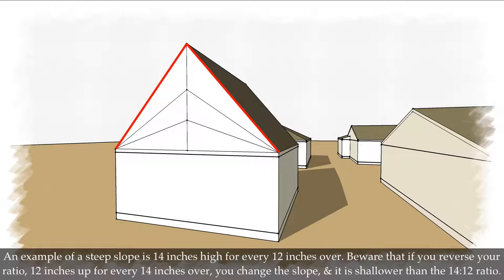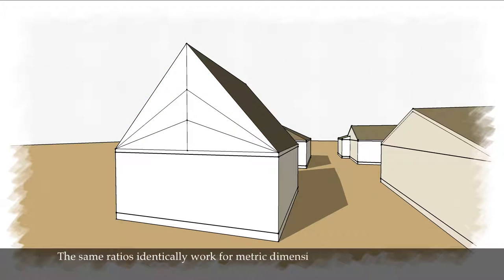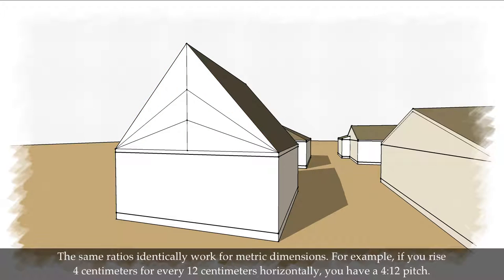An example of a steep slope is 14 inches high for every 12 inches over. Beware that if you reverse your ratio, say 12 inches up for every 14 inches over, you change the slope and it is shallower than the 14-12 ratio. The same ratios identically work for metric dimensions. For example, if you rise 4 centimeters for every 12 centimeters horizontally, you have a 4 to 12 pitch.